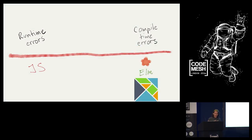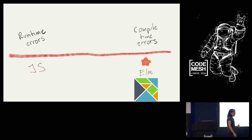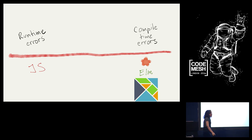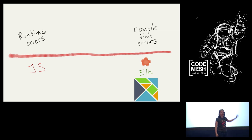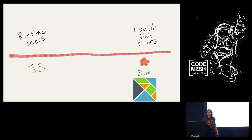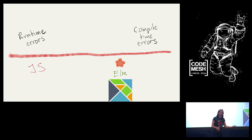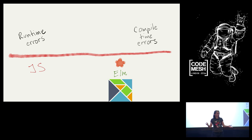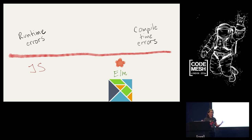If nothing else out of this talk, I want you to get something about the trade-offs being made and how we can think about them and make them not painful. On the spectrum of runtime errors vs. compile-time errors, Elm falls very far in the compile-time spectrum. Once my Elm compiles, it's going to run in the browser and chances are decent it's going to do what I wanted it to do.